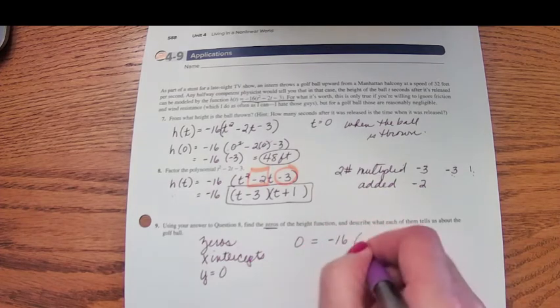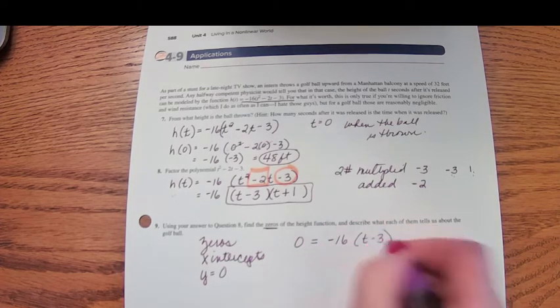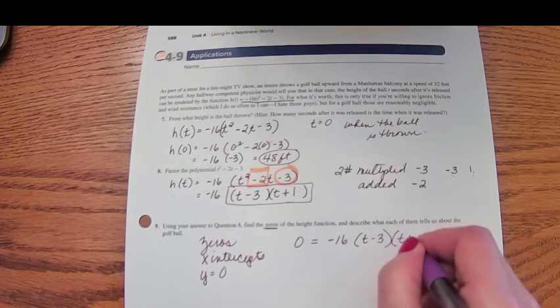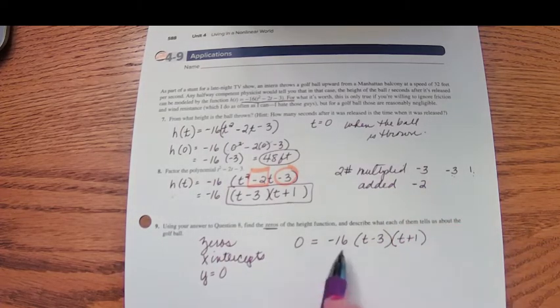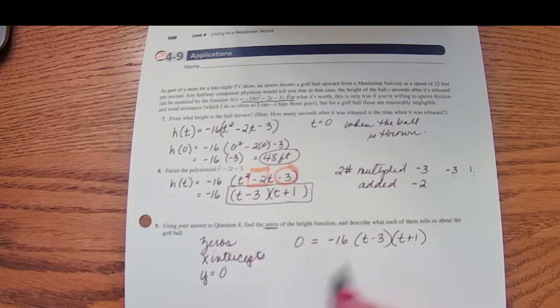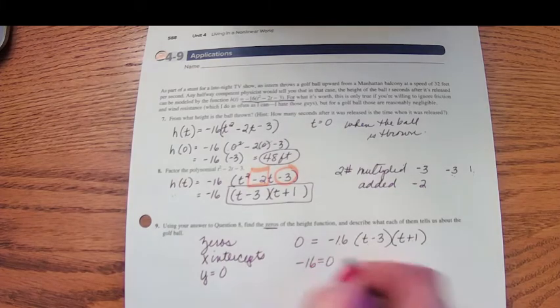Negative 16 times t minus 3 times t plus 1. If this times this times this equals 0, then either negative 16 equals 0...